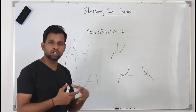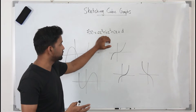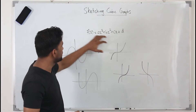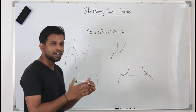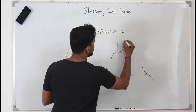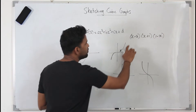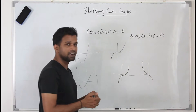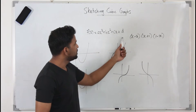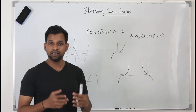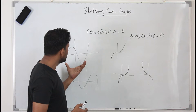To sketch a cubic graph, the first step is to find the roots of the given cubic function. In this lesson we won't cover how to solve a general cubic — we'll mostly deal with cubic functions already in factorized form, such as (x−2)(x+1)(1−x). When you multiply all three factors you get a cubic function, but here it's already factorized. Equate the function to zero to find the roots, and take note of a few things before moving on to sketching.